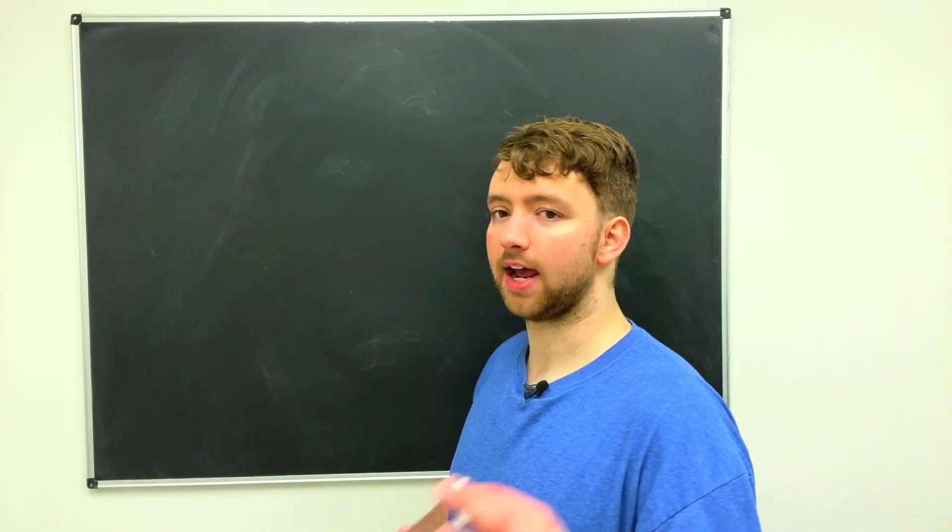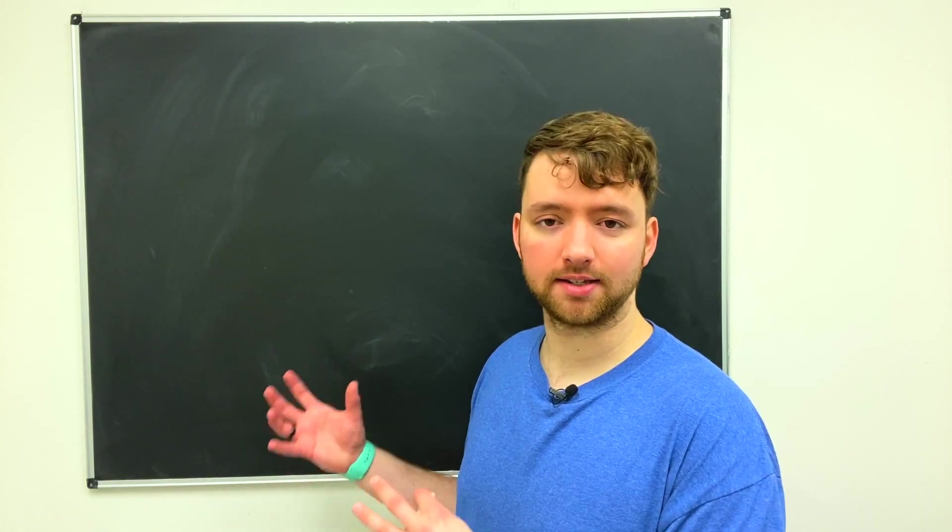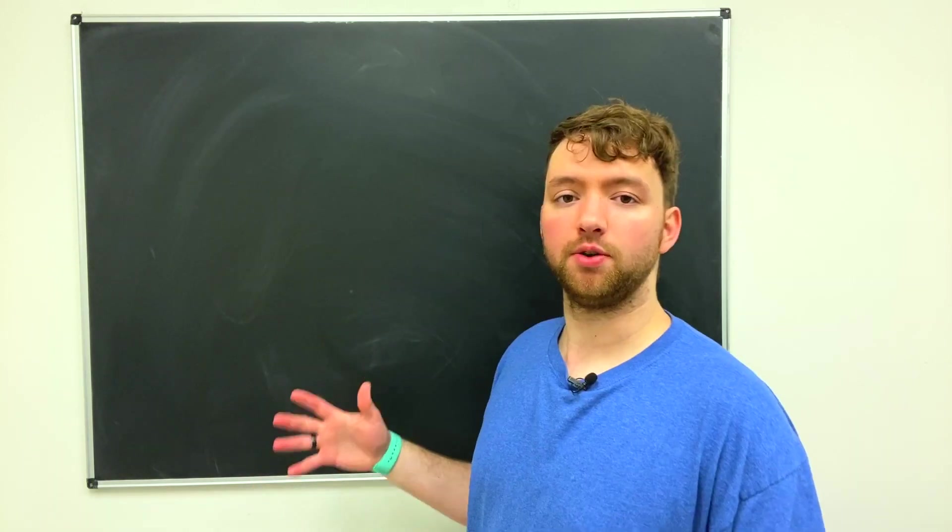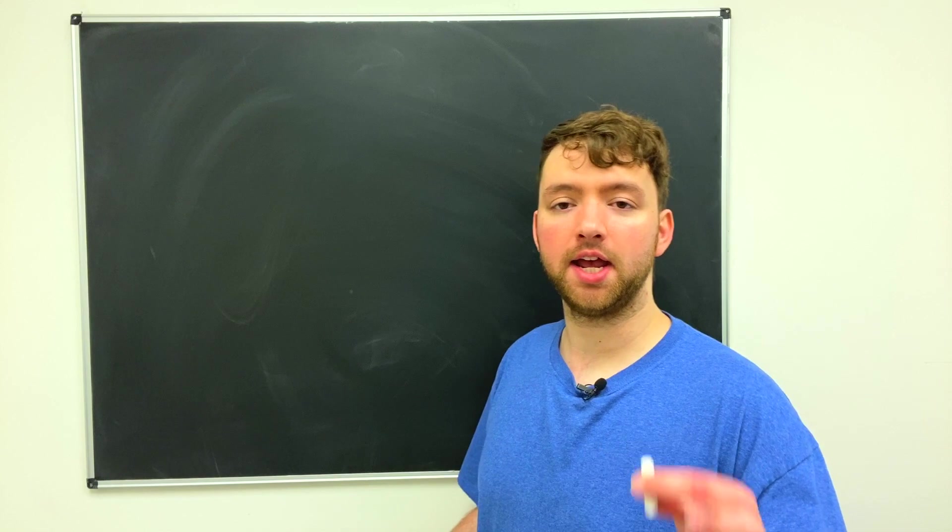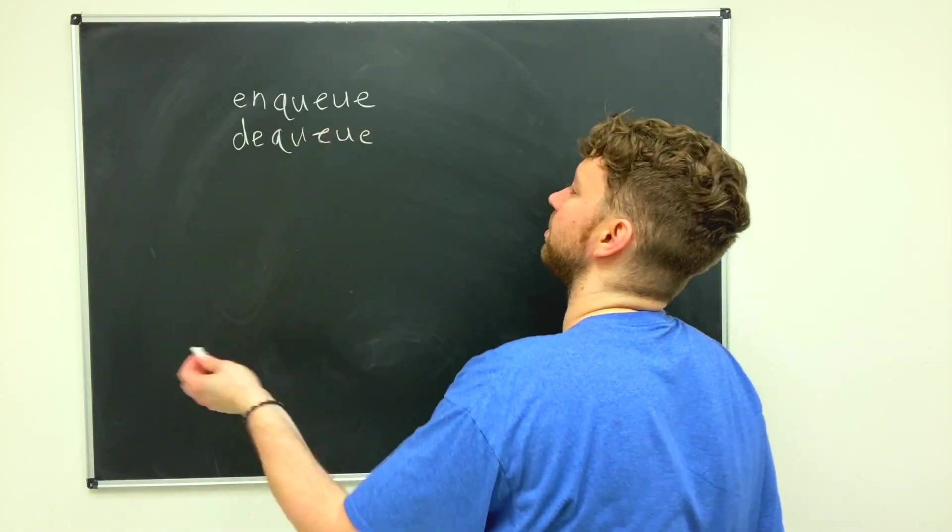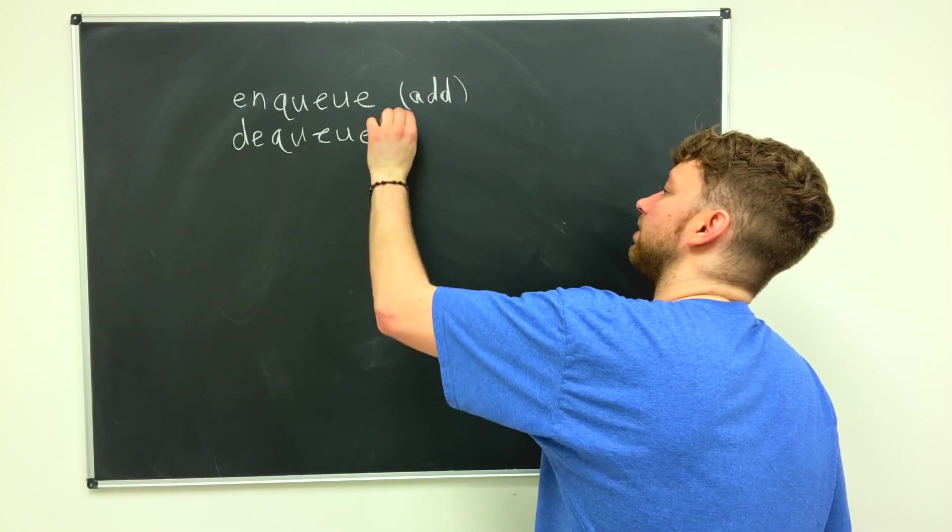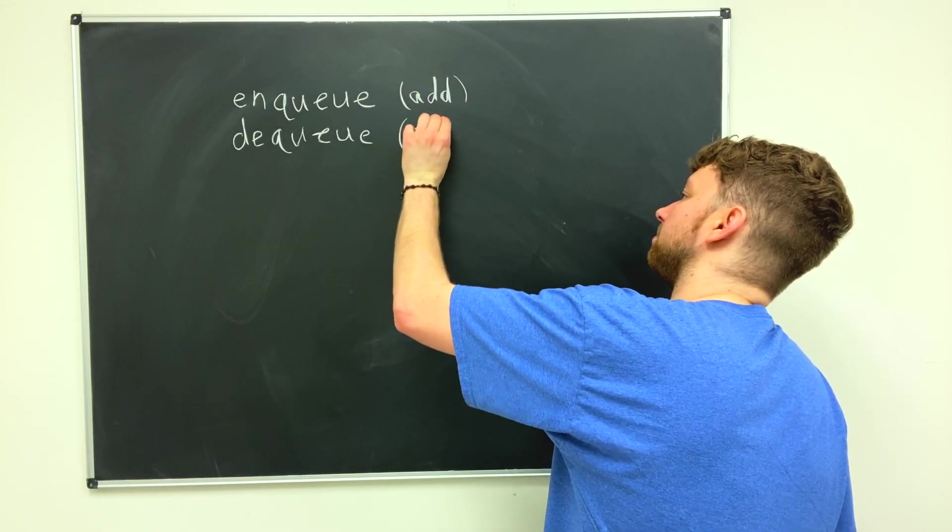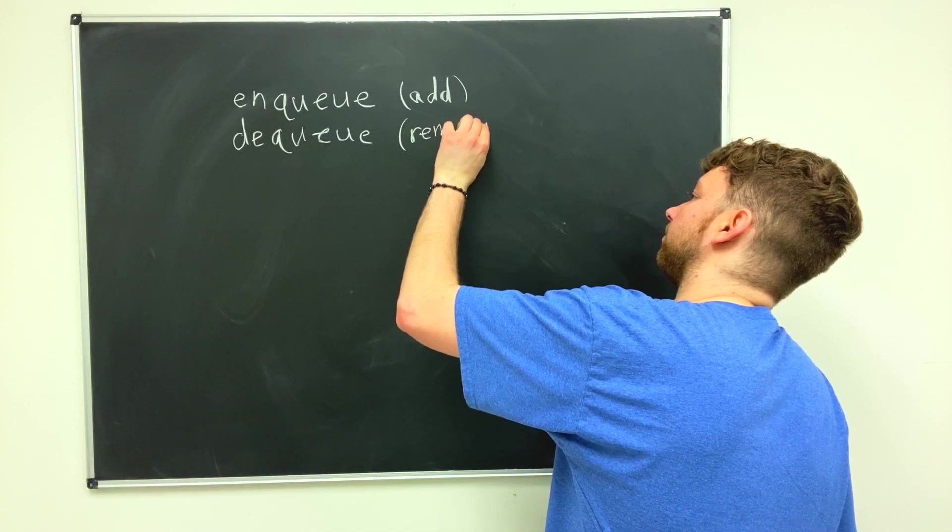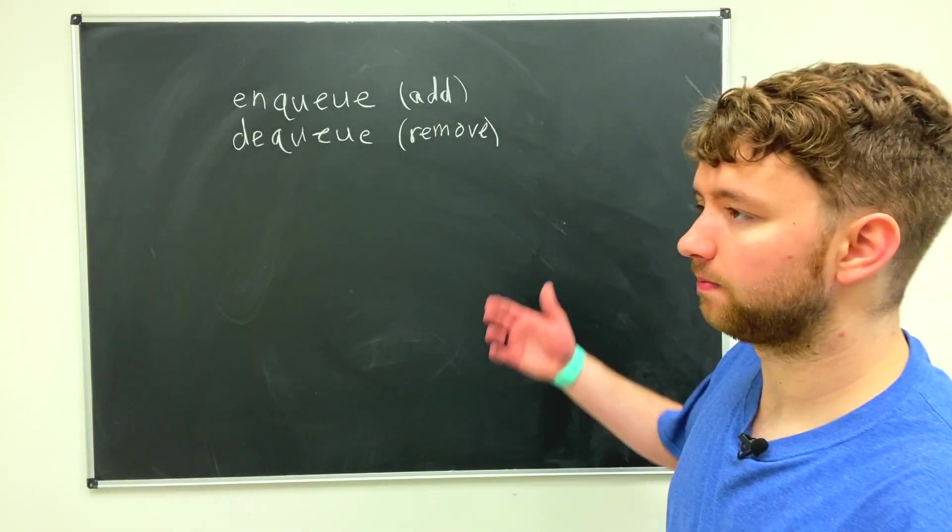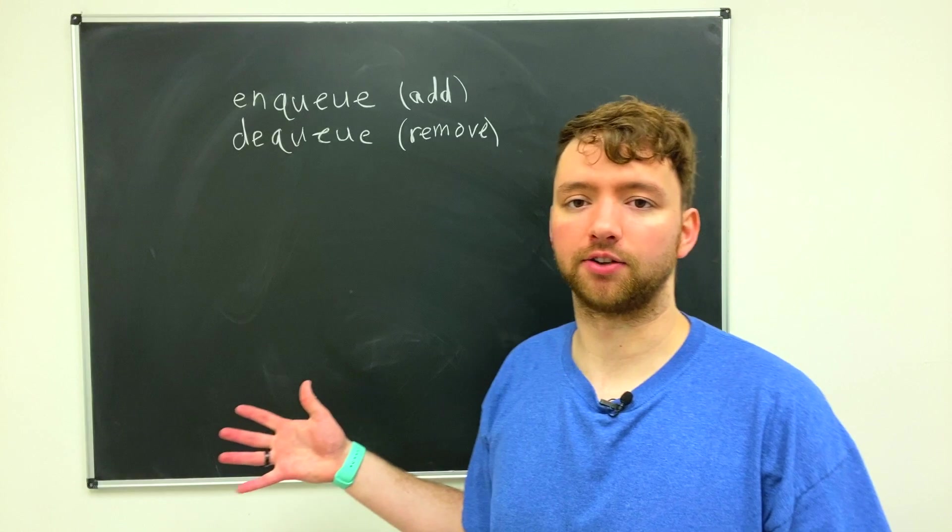Just like a stack has push and pop, a queue has a similar set of operations. Those operations are enqueue and dequeue. This is the equivalent of adding something to the collection, and this is the equivalent of removing something from the collection. So for a stack this would be push and pop, it's just for different directions.